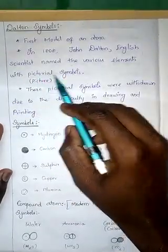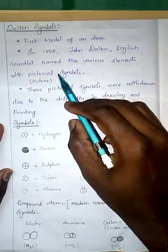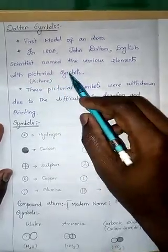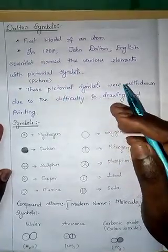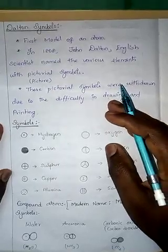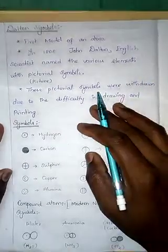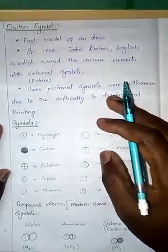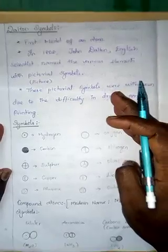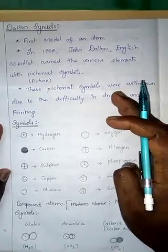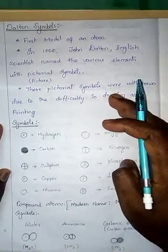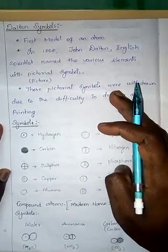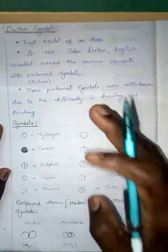Dalton used pictures to represent elements — he called them pictorial symbols. John Dalton was a wonderful chemist, metrologist, and mathematician. He was also a schoolteacher, and later a principal and professor.